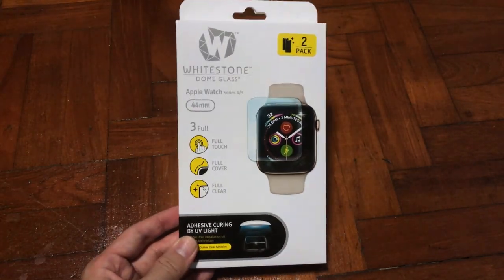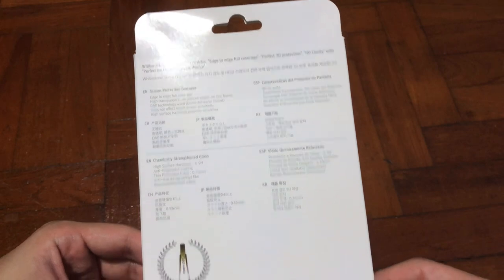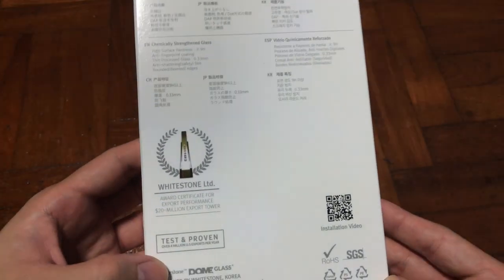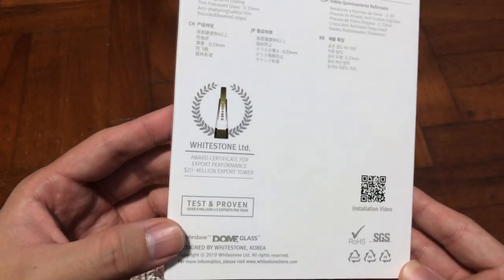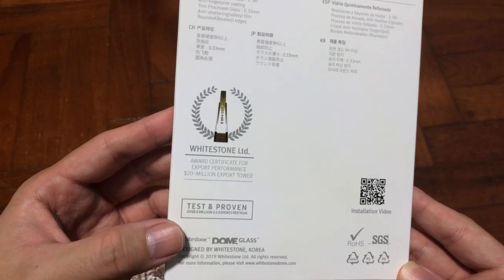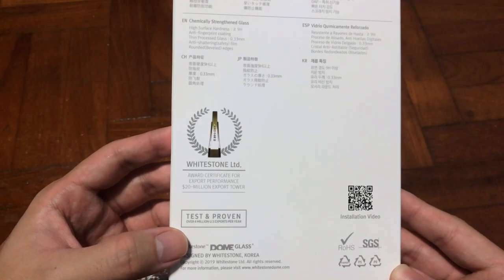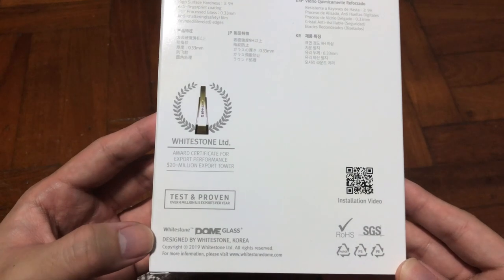This screen protector is from Whitestone dome glass. Let's take a look at the packaging itself, pretty straightforward in terms of design, nothing special. At the back of the packaging is written out a standard write-out and also award certificate, tested and proven guarantee, and there's also a QR code installation guide.